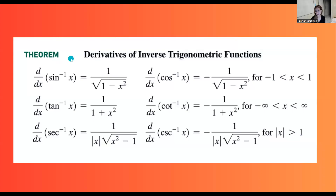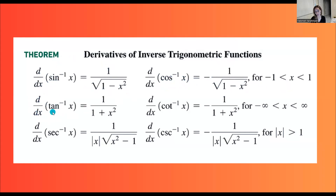Basically, it is all the derivatives of inverse trig functions that you need here. The inverse sine derivative is 1 divided by the square root of 1 minus x squared. The derivative of inverse cosine x is negative 1 divided by the square root of 1 minus x squared. Please take a look at the notes as well. And the inverse tangent derivative is 1 over 1 plus x squared.